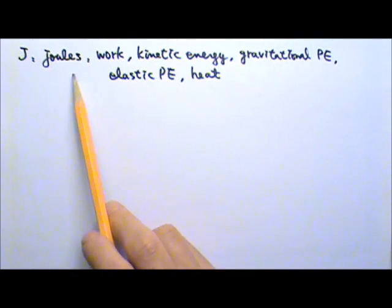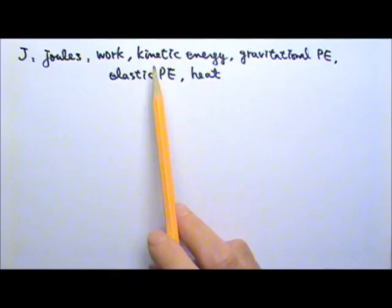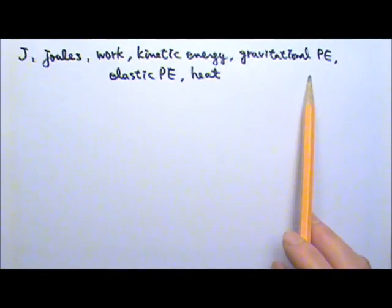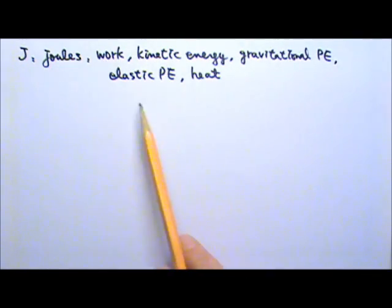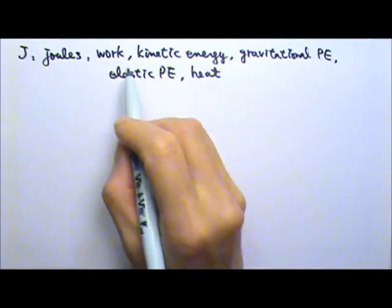We have been using joules for the units of work, kinetic energy, gravitational potential energy, elastic potential energy, and heat. They are the same kind of things, so they should have the same unit. For example, work.